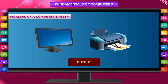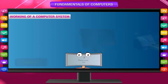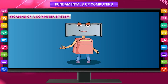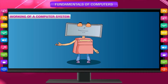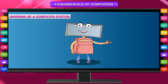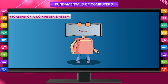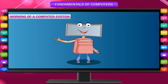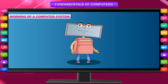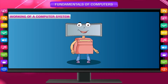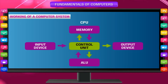Output involves displaying or showing processed data in a location, depending upon program instructions. All the above activities are performed by the CPU. The control unit decides when to take input from the input device and store it in the main memory unit. When required, the data is sent to the ALU to perform calculations as stored in the program. After calculations, it decides where to store the processed data. This is called the block diagram of the computer.